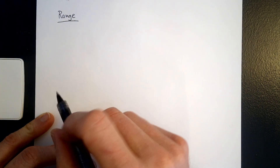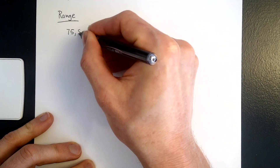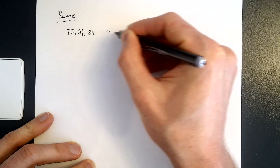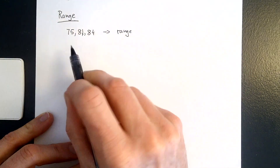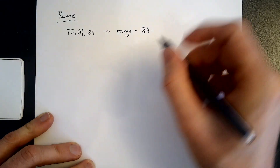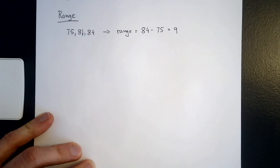The range is simply the largest value minus the smallest value. Think again about the 3 scores of the 3 students: 75, 81, and 84. The range would be the largest value minus the smallest value, so 84 minus 75. The range in this case is equal to 9.